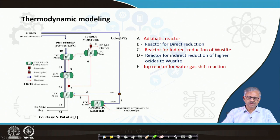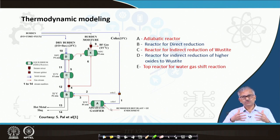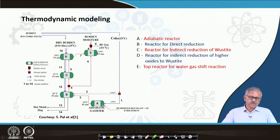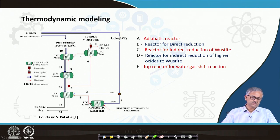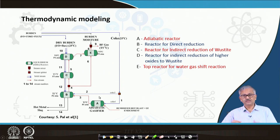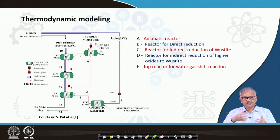So air blast and coke enter the adiabatic reactor. Using FACSAGE you can calculate total heat effects, gas temperature, and final composition — which will be CO and nitrogen from the air blast. This CO and nitrogen will enter reactor B, the reactor for direct reduction, which is a high temperature reactor. A certain amount of coke participates in direct reduction here. How much coke goes to direct reduction is estimated by an iterative method.